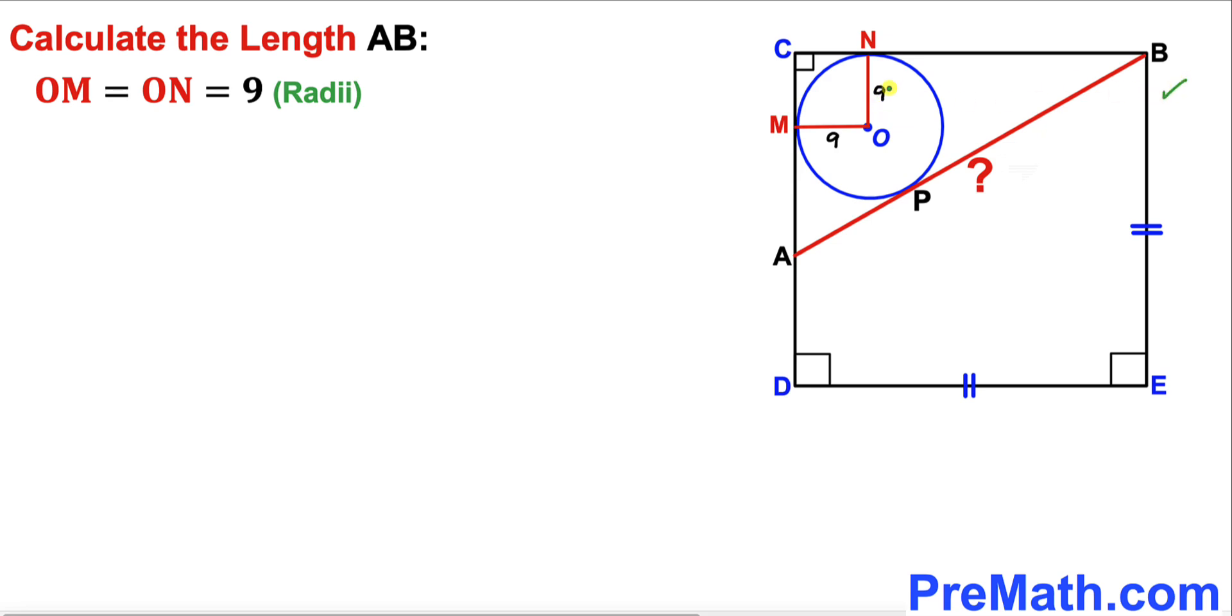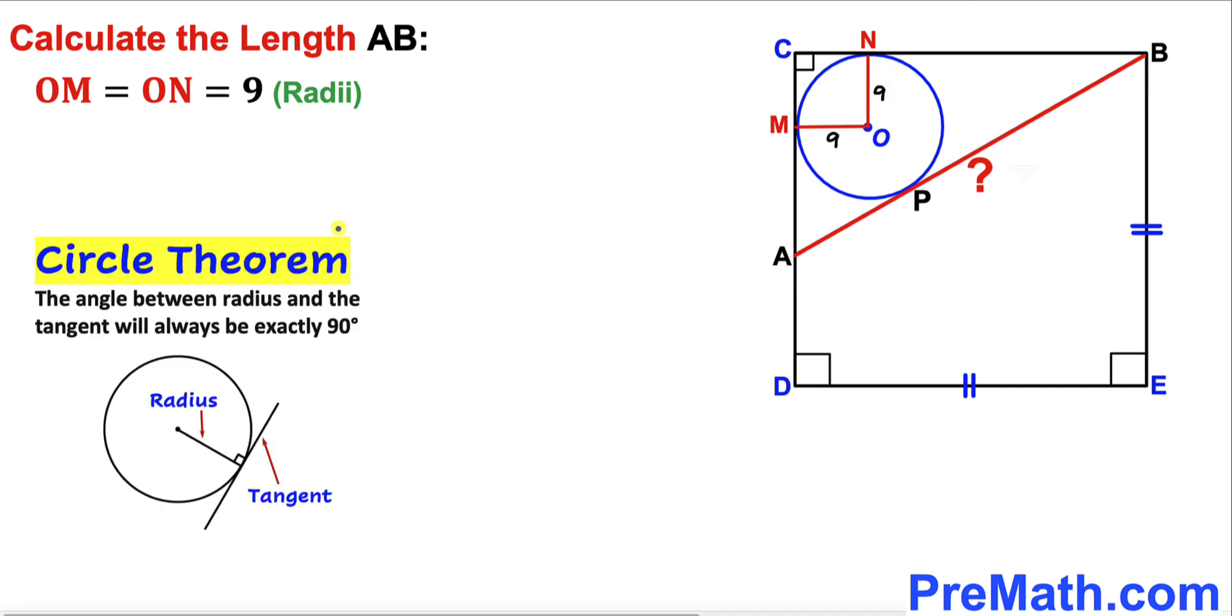As you can see in this new diagram, OM and ON are our radii.